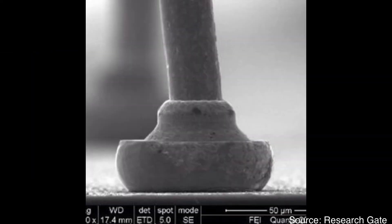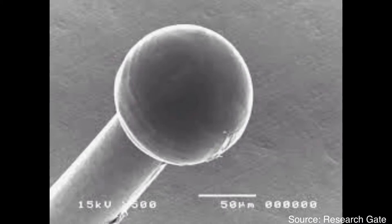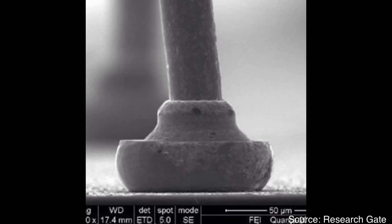The first step is to make a die bond pad. During this step, we create a ball shape at the end of the wire using an electrical spark called electronic flame-off. This ball shape is called a free air ball, or FAB. The wire with the free air ball moves down to the die bond pad, then forms a ball bond using ultrasonic energy and heat energy.